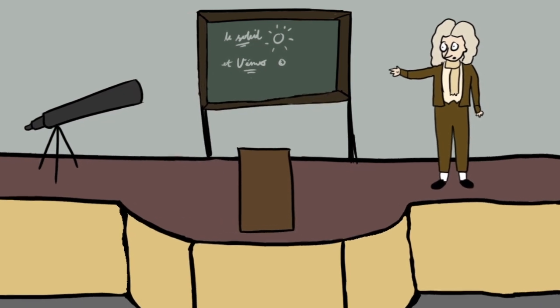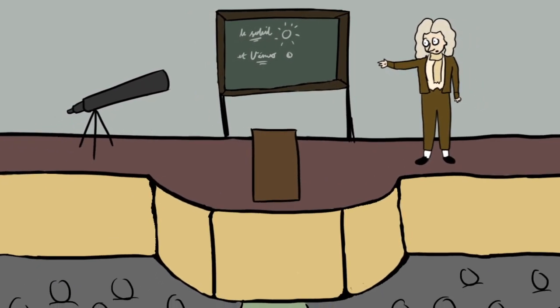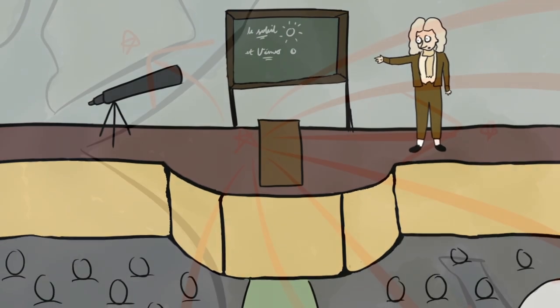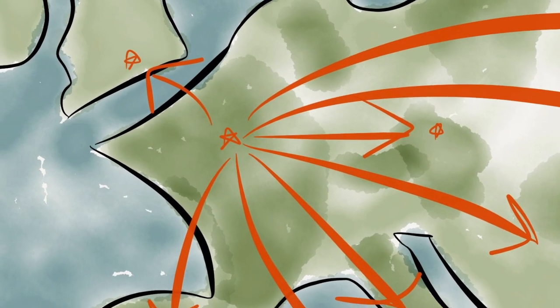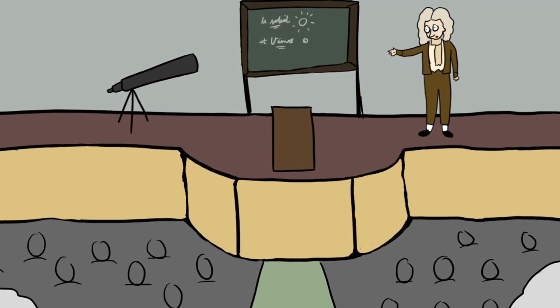It was Edmund Halley himself who suggested that the astronomers of Europe prepare for the transits of the 18th century by observing them from numerous locations. Then they might pool their data and use it to calculate the distance of the Earth from the Sun.